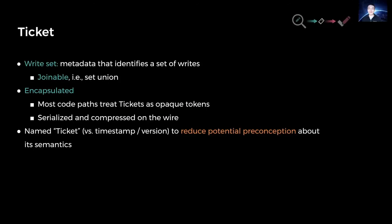Now let's talk about tickets. A ticket contains metadata that identifies a set of writes. As write sets, tickets are joinable by way of set union. Tickets are encapsulated — most code paths treat tickets as opaque tokens — and they can be serialized and compressed on the wire. We even encapsulate the name. If we called write metadata a timestamp or transaction ID, infrastructure engineers often conflate guarantees about its contiguous prefix — say, transactions 0 through 100 — versus guarantees about an individual write, namely transaction 100. So we gave this write set a new name, ticket, to reduce potential preconception about its semantics.